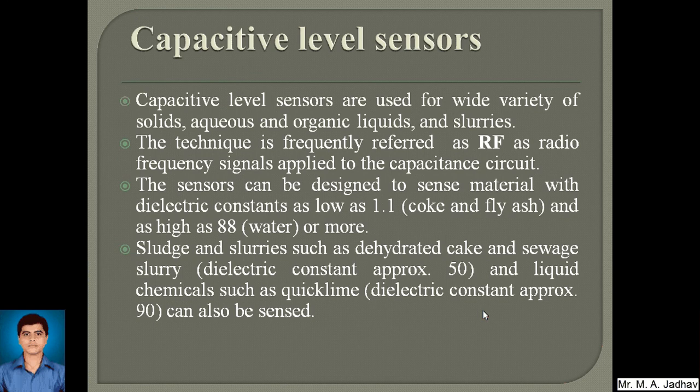Capacitive level sensors are used for a wide variety of solid, aqueous, or organic liquids, or slurries. The technique is frequently referred to as RF, or radio frequency signals applied to the capacitance circuit. The sensors can be designed to sense material with dielectric constants as low as 1.1, in the case of coke or flash, and as high as 88 in the case of water or more. Slurges and slurries such as dehydrated cake or sewage slurry, with dielectric constant approximately 50, and liquid chemicals such as quicklime with dielectric constant approximately 90, can also be sensed.